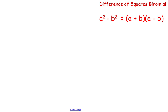And a difference of squares binomial means that if something can be written as a² minus b², it can also be written as a plus b times a minus b.